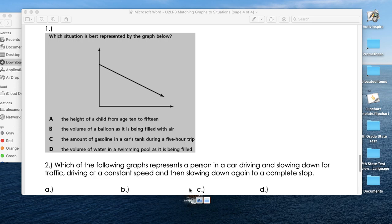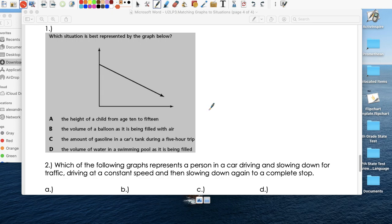Exit slip. Which situation is best represented by the graph? So what's happening? Whatever is happening is decreasing. The height of a child from age 10 to 15 decreases? Absolutely not. The volume of a balloon as it's being filled with air. The volume of the balloon should be going up. So not this one either. The amount of gas in a car tank during a five-hour trip. That makes sense, right? So if you put gas at that stop at the gas station. And as you're traveling, what happens to the gas that's in your tank? It's decreasing. So this so far looks like a candidate. The volume of water in a swimming pool as it's being filled. Well, if it's being filled, the volume of water should be going up. So C is our answer of choice.